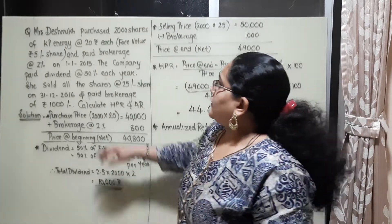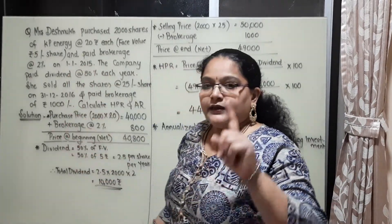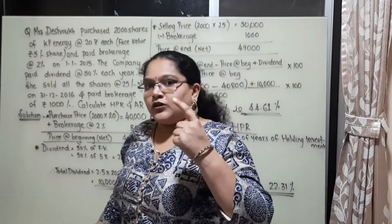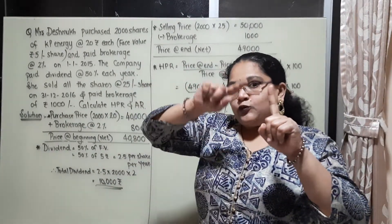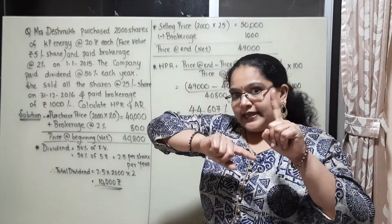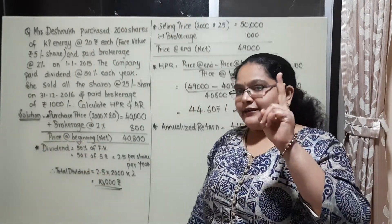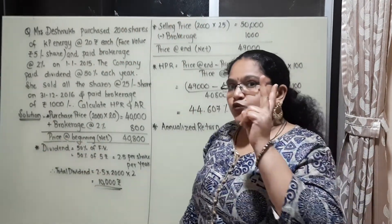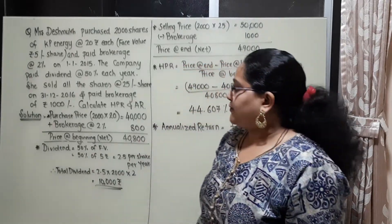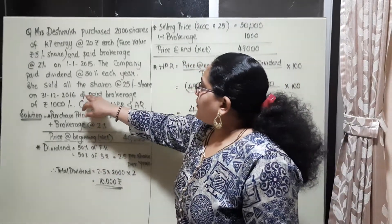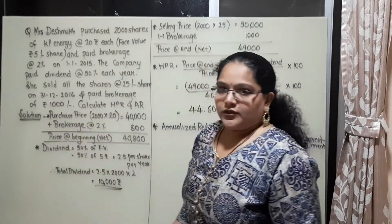From 1st January 2015 till 31st December 2015 is the first year. From 1st January 2016 till 31st December 2016 is the second year. So she held her investment for 2 years. She also paid a brokerage of rupees 1000 when she sold the shares.